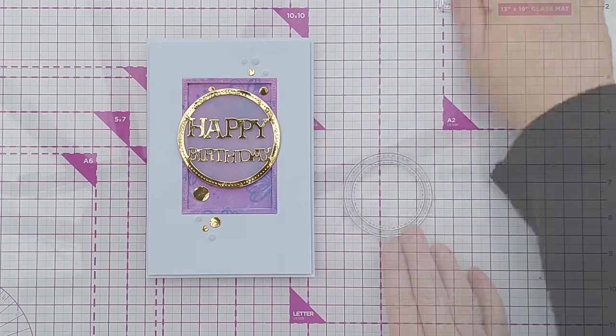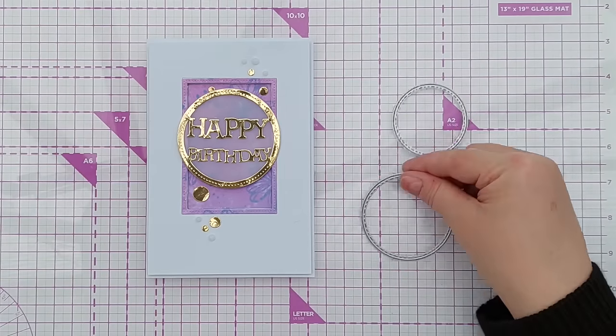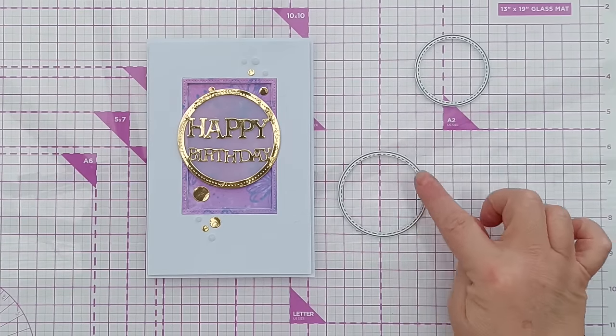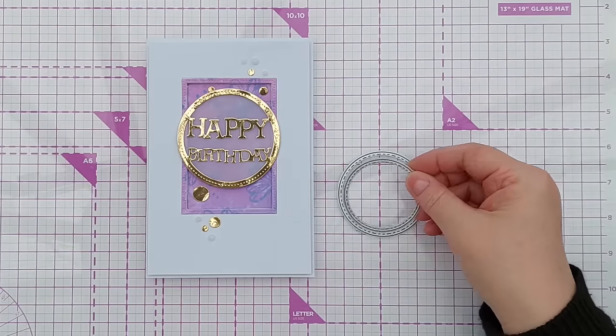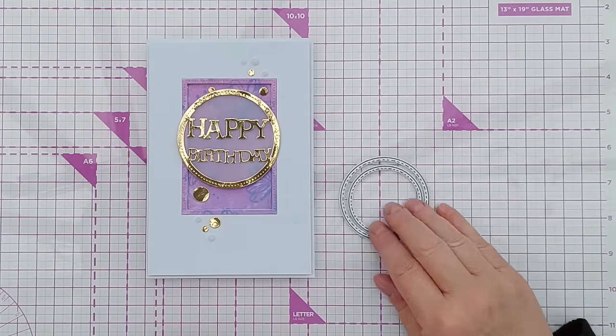I'm going to use two circle dies. The outer one is stitched because I want stitching on my frame. The inner one doesn't need to be stitched, but these come from the same set so they are stitched.